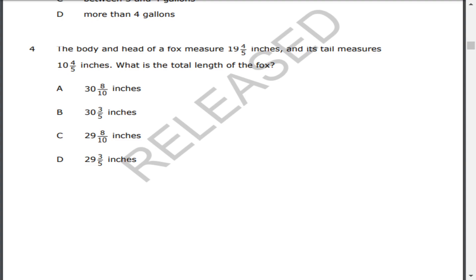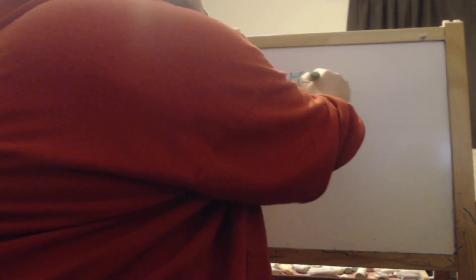So this is a pretty straightforward addition problem, right? We're adding the length of the body and head with the length of the tail to find the total length of the fox.